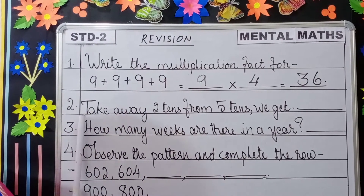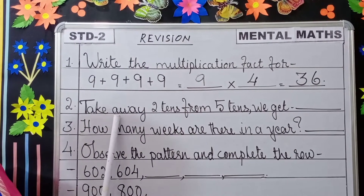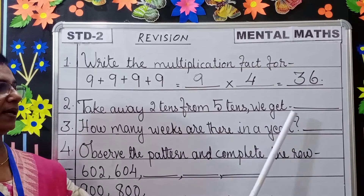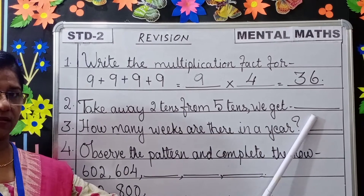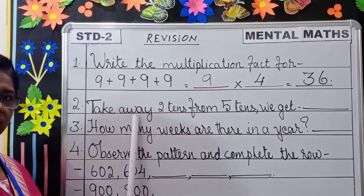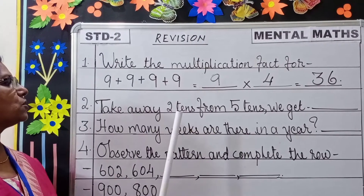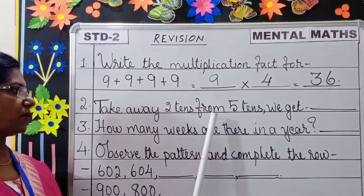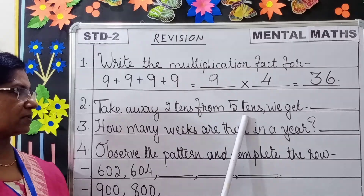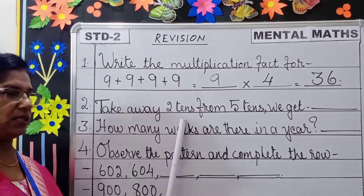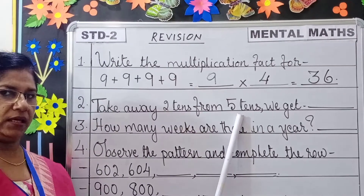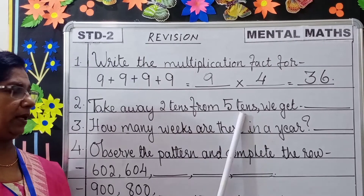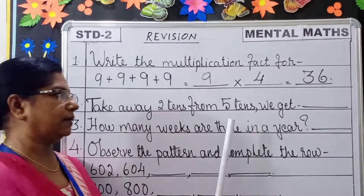Next question: Take away 2 tenths from 5 tenths, we get dash. Take away means you have to subtract. So you will subtract 2 tenths from 5 tenths. What is 2 tenths? 20. 5 tenths? 50. So you will subtract 20 from 50. You will get 30.